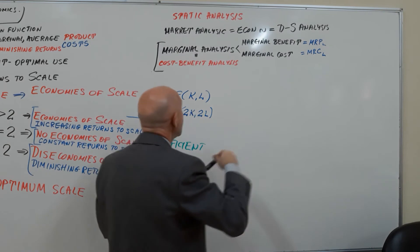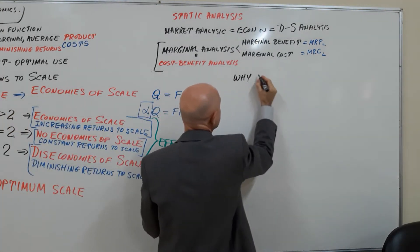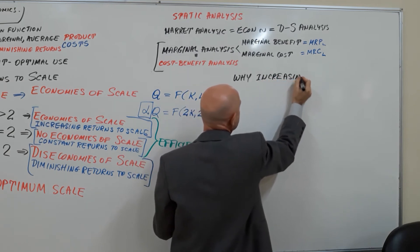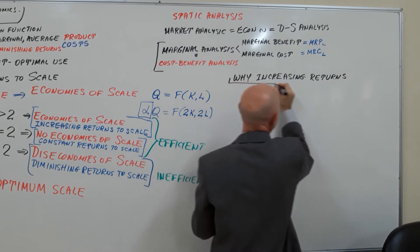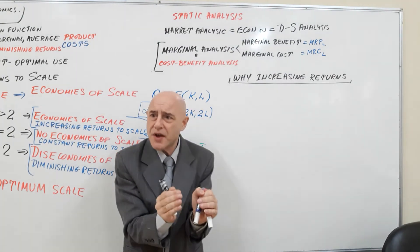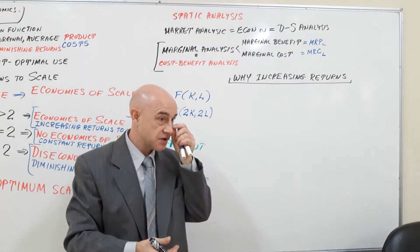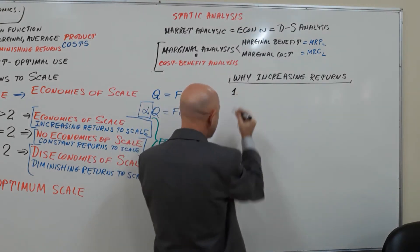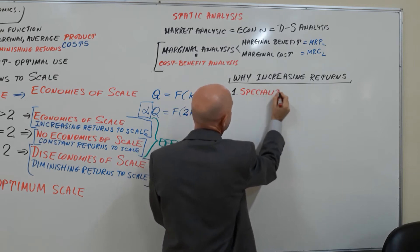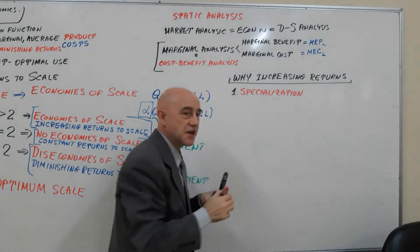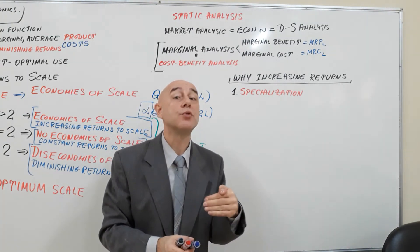The first question is why, why you have increasing returns to scale? Why increasing returns? In other words, if your business is very small, why if you grow the business it will grow faster than the number of inputs? And there are simple answers. Number one is specialization.